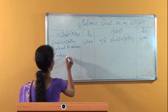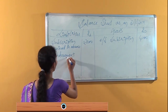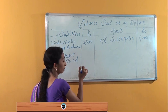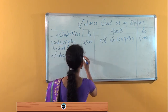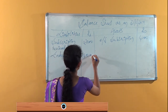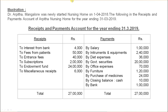Next is the endowment fund. The endowment fund is taken as a liability. The assumption here is that Dr. Arpita and Dr. Mangler have started a newly opened nursing home, and there is no introductory amount given.